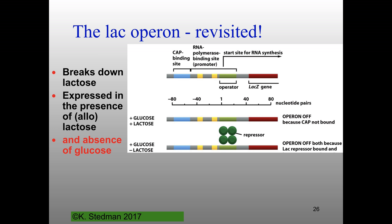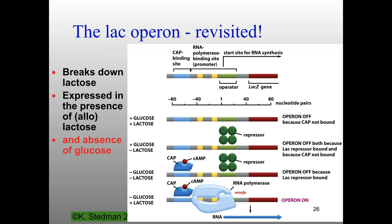In the first scenario, high glucose and high lactose — you don't need the operon on because you're getting enough energy from glucose, and therefore the CAP site is not bound. In the second example, you have glucose but no lactose, so the lac repressor sits on the site because you have enough energy and no lactose to metabolize. In the third example, the operon is off because although you have no glucose — meaning high cyclic AMP — which would normally stimulate CAP binding, you don't have lactose, so the repressor is bound. It's only with low glucose and lactose present that the operon turns on.